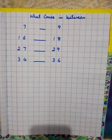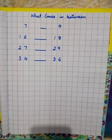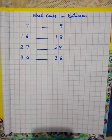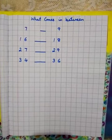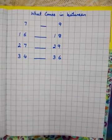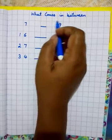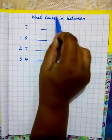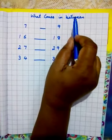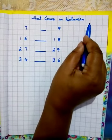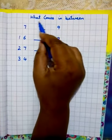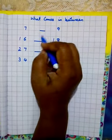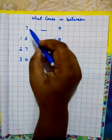Hello children. In our previous class you learned what comes after. Today we will learn what comes in between. In between means the middle number. Here you can see some examples.